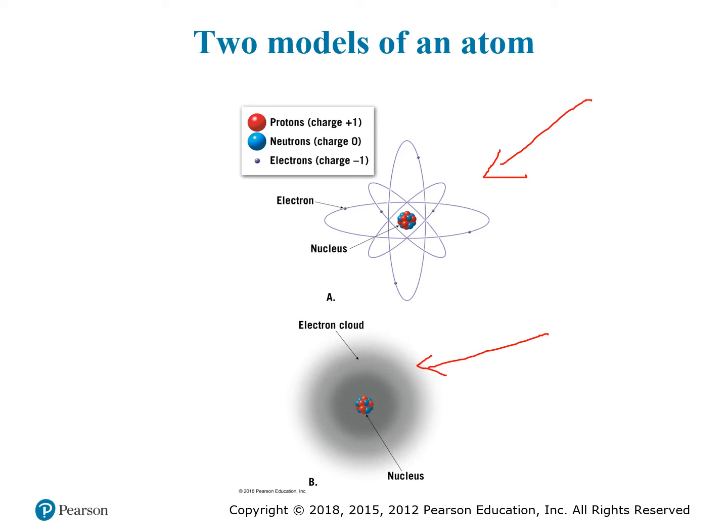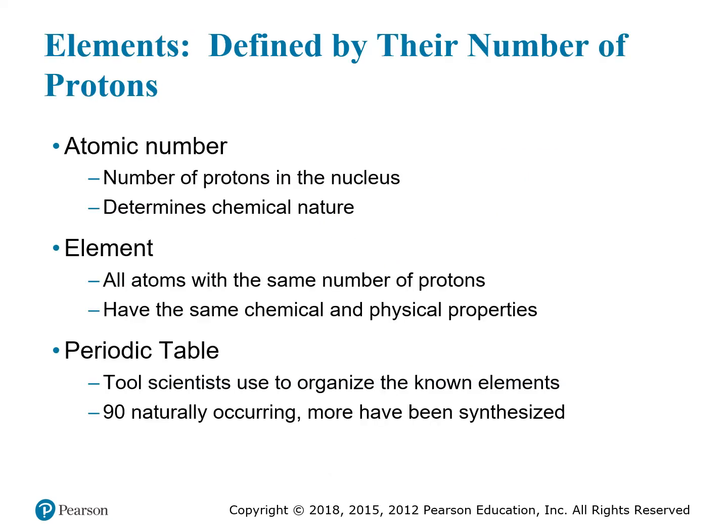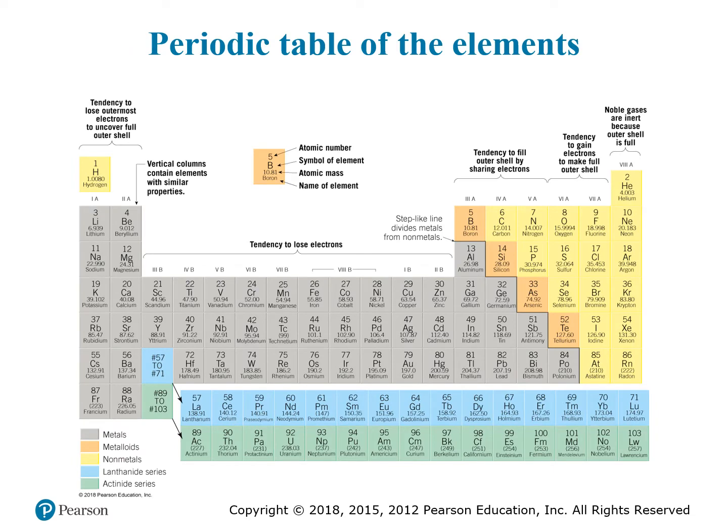The atomic number is the number of protons in the nucleus of an atom, and it determines the chemical behavior of that atom. An element consists of all atoms with the same number of protons, sharing the same chemical and physical properties. Scientists organized all elements into the periodic table; there are over 90 naturally occurring elements, plus a few synthesized ones.